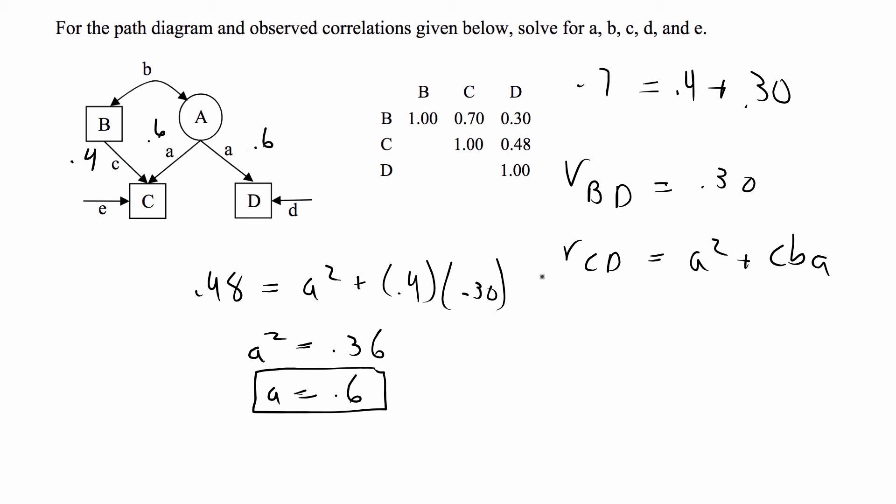And now we can solve for B. So R_B,D is 0.3. That's equal to 0.6 times B, which means that B is equal to 0.5.